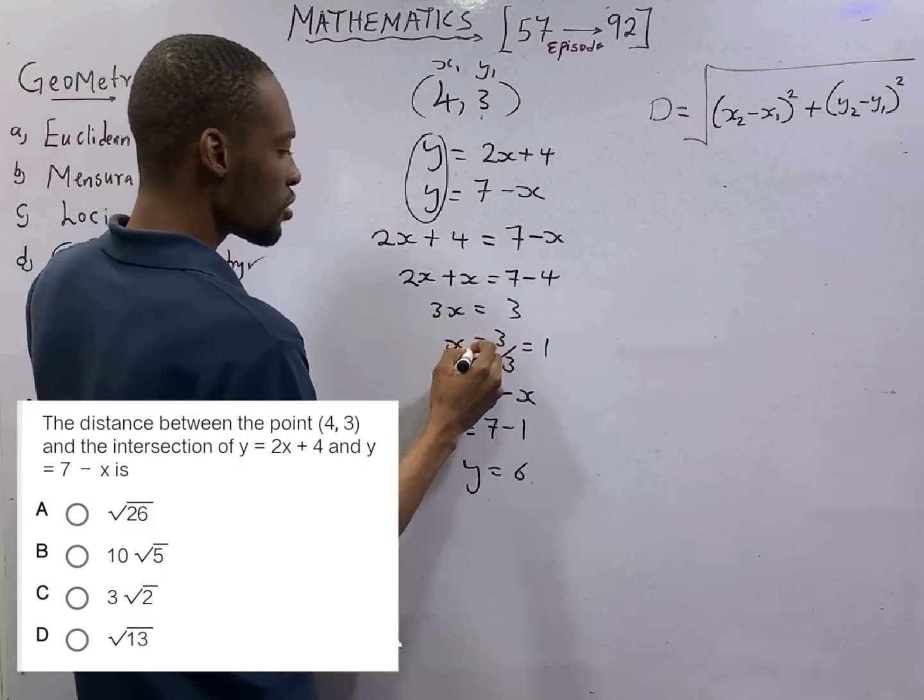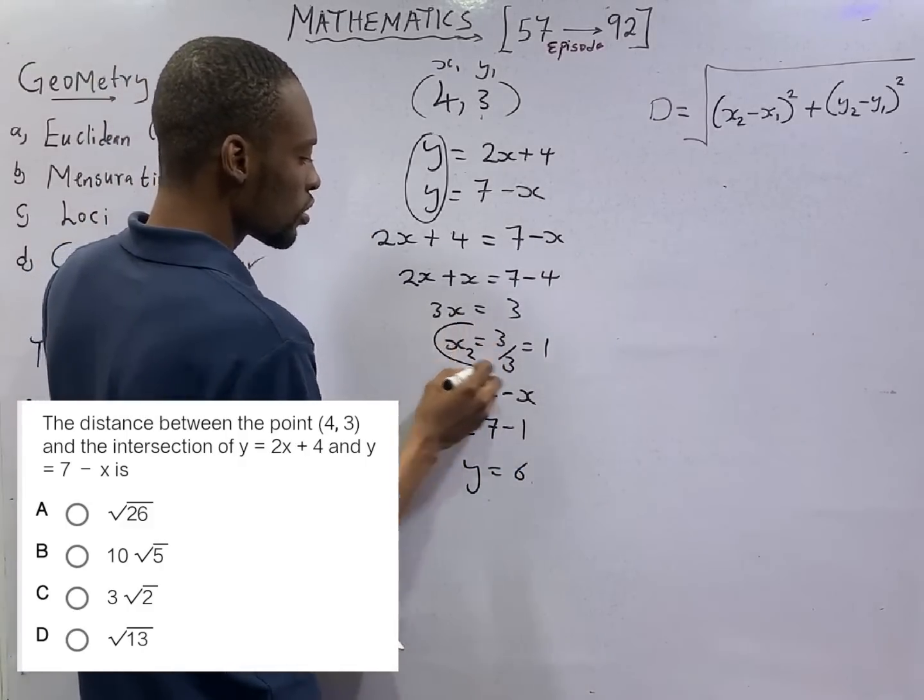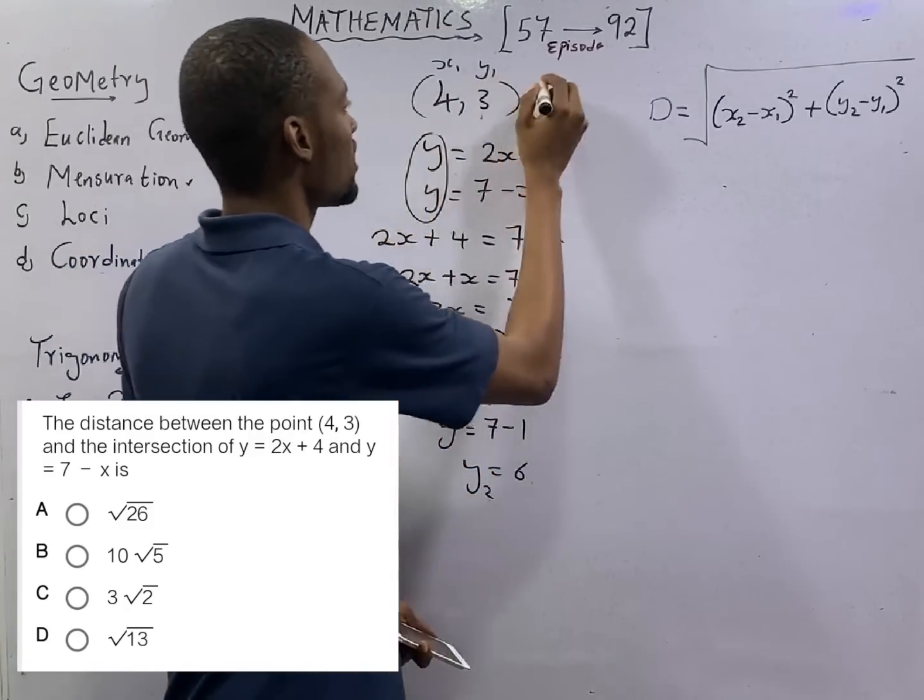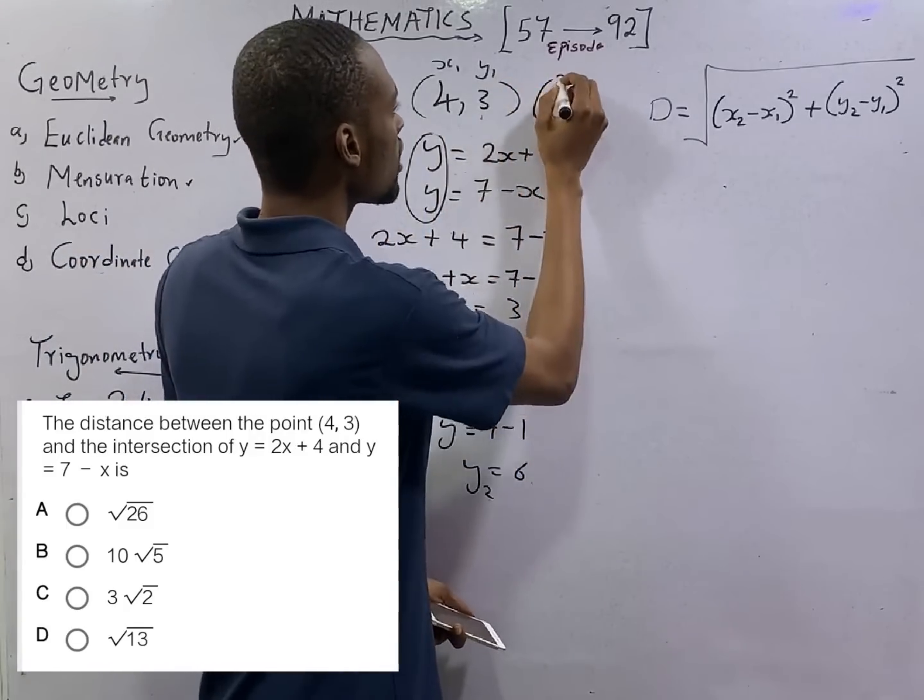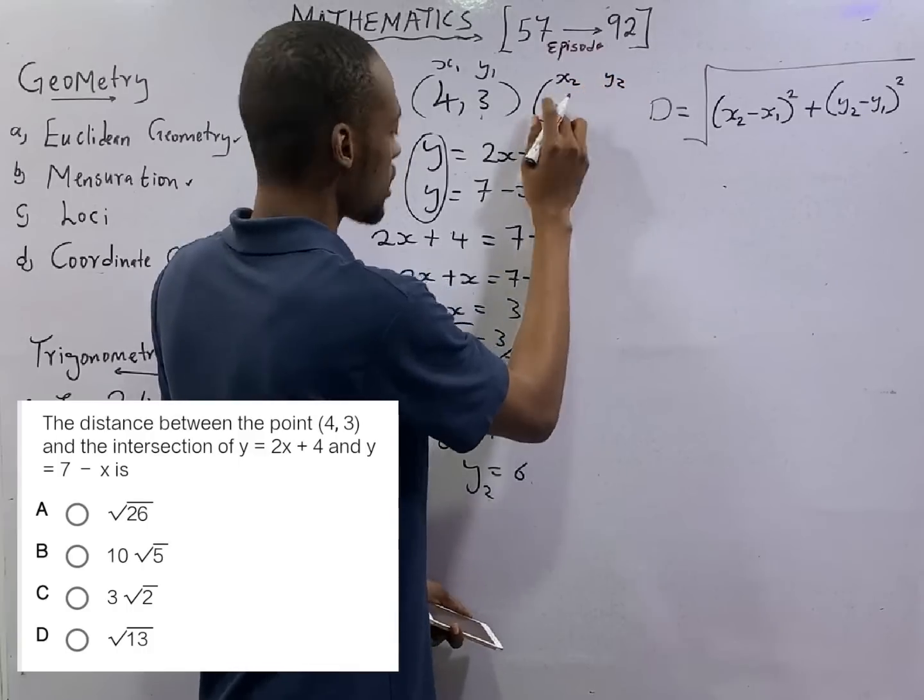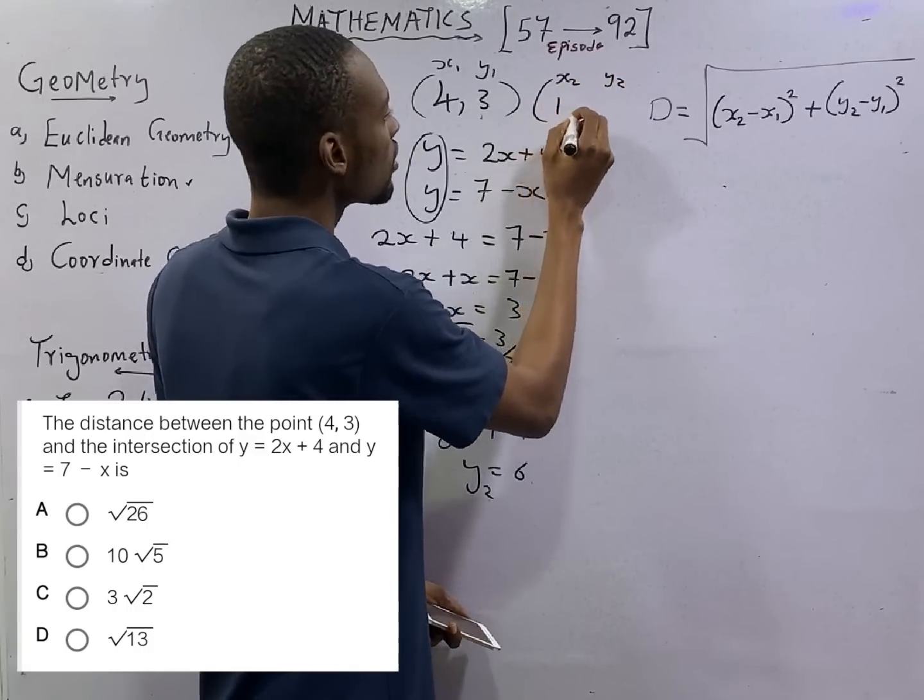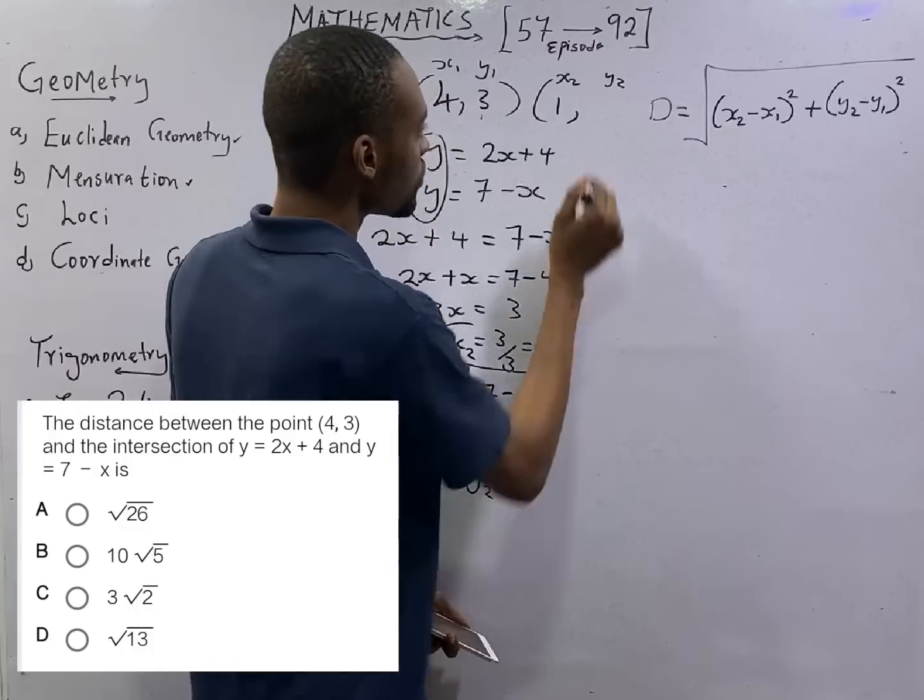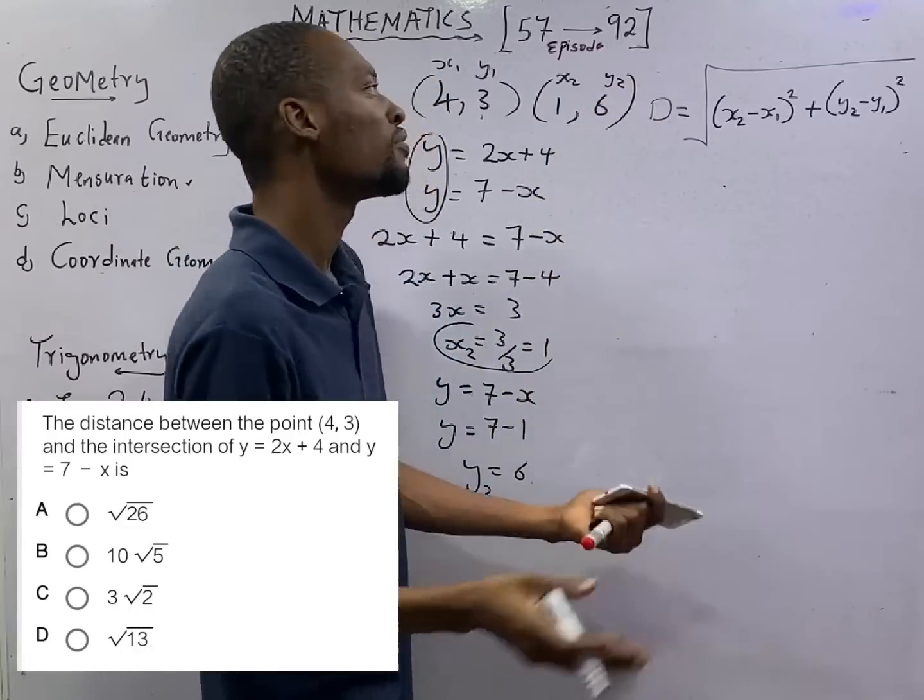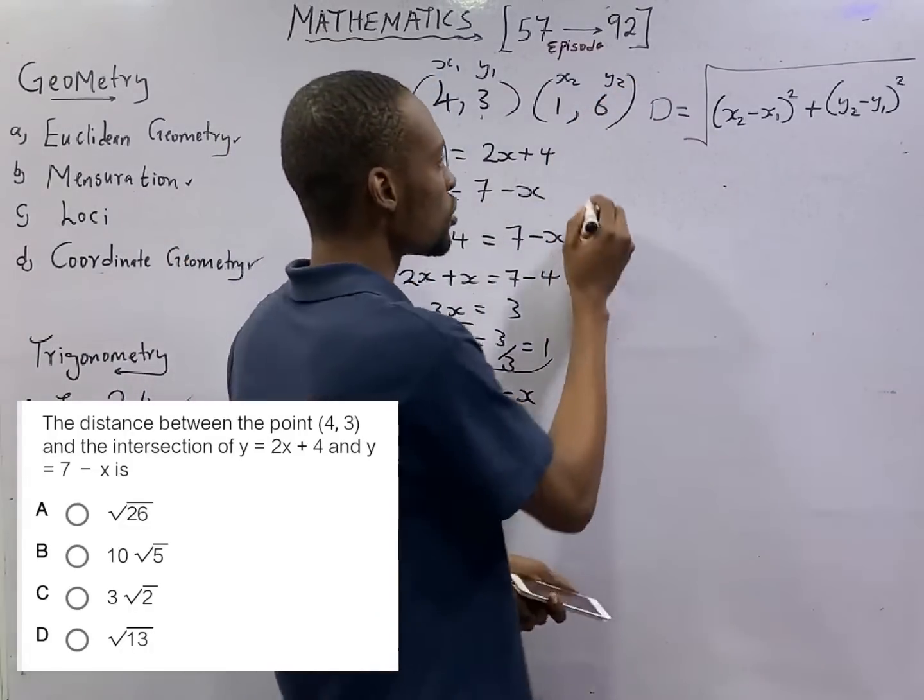So this is your x2 and this is your y2. We come here and say x2, y2. x2 is 1, y2 is 6 like this. So our distance becomes